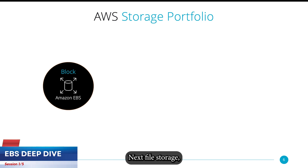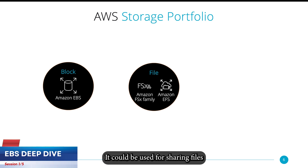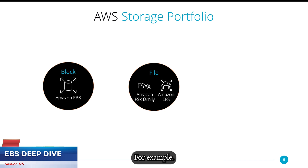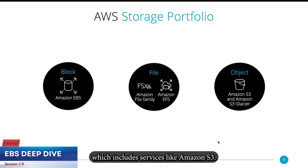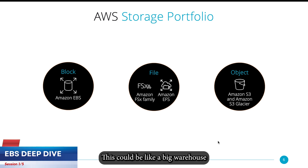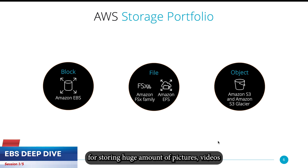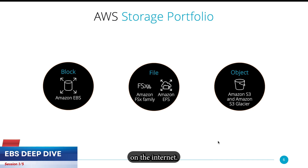Next, file storage, like Amazon EFS. It's like a digital filing cabinet. It could be used for sharing files across different computers and networks — useful for team collaboration, for example. Lastly, object storage, which includes services like Amazon S3. This could be like a big warehouse for your data. It's great for storing huge amounts of pictures, videos, or any kind of data, and you can access it from anywhere on the internet.